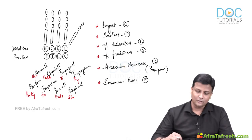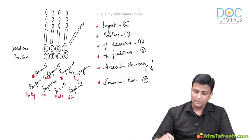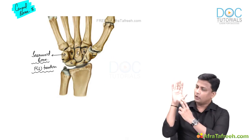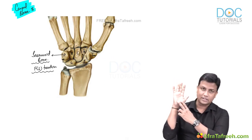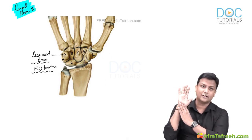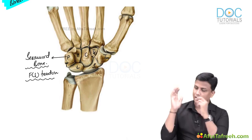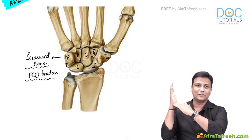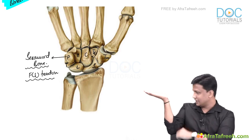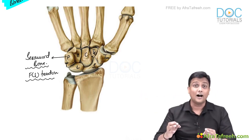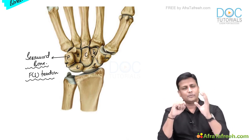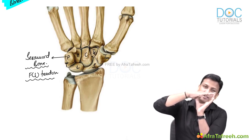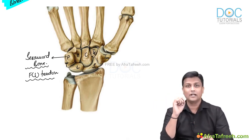Now let's understand the carpal tunnel. If you observe all eight carpal bones, they are not arranged in a straight line — there is a concavity in the front, forming a carpal arch. If you cut it transversely, all carpal bones are arranged in the form of an arch. Cover that arch with the flexor retinaculum and it becomes a tunnel — and this tunnel is referred to as the carpal tunnel.